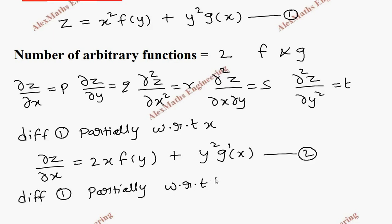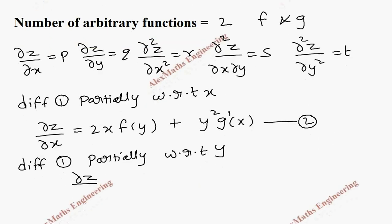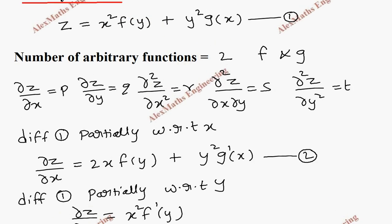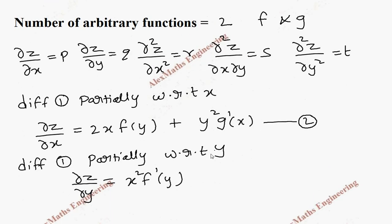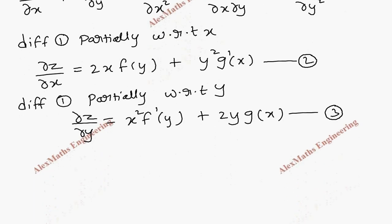Now differentiating the first expression partially with respect to y. We get dou z by dou y equal to: x square is constant, so f of y derivative is f dash of y; then g of x is constant and y square derivative is 2y, so the constant g of x is written as it is. This is our third expression.